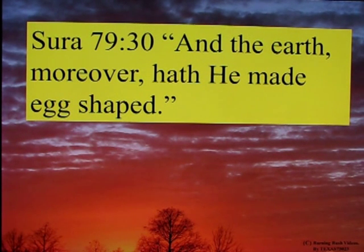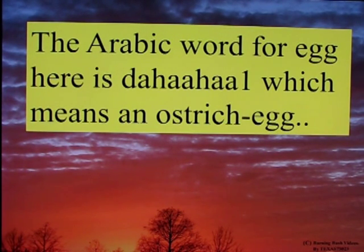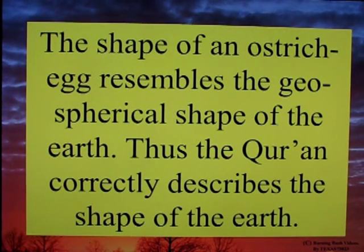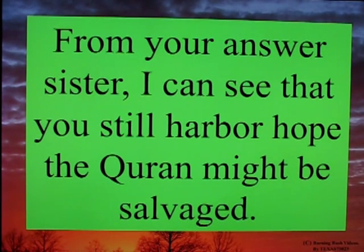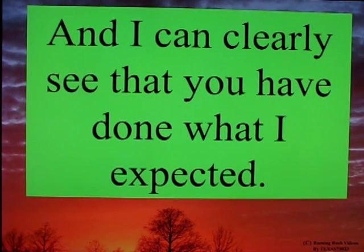Surah 79:30 — 'And the earth, moreover, has he made egg-shaped.' The Arabic word for egg here is dhahawan, which means an ostrich egg. The shape of an ostrich egg resembles the geospherical shape of the earth, thus the Quran correctly describes the shape of the earth. From your answer, sister, I can see that you still harbor hope the Quran might be salvaged, and I can clearly see that you have done what I expected.